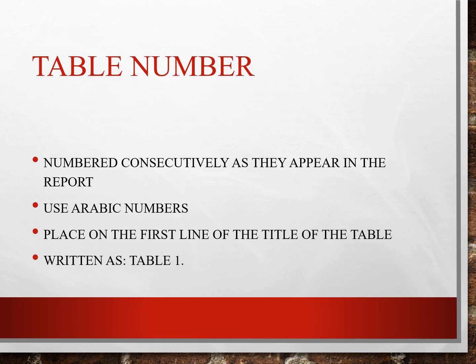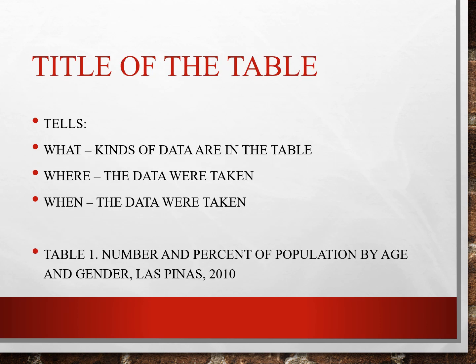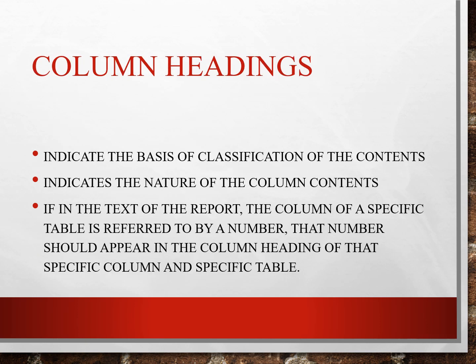Table number: it's numbered consecutively as they appear in the report. Use Arabic numbers and place on the first line of the title of the table, written as Table 1. Title of the table tells what, where, and when the data was taken — for example, Table 1: Number and Percent of Population by Age and Gender, 2010. Column headings indicate the basis of classification of the contents and the nature of the column contents. If in the text of the report a column is referred to by a number, that number should appear in the column heading.